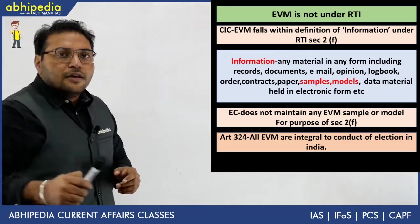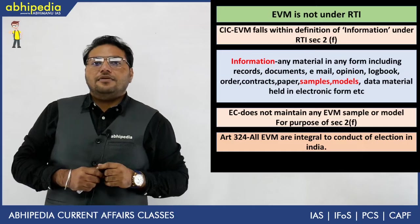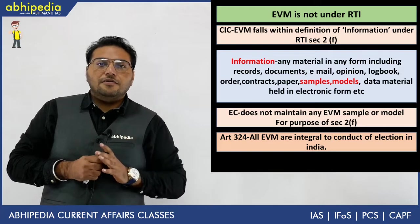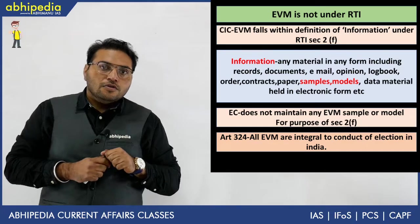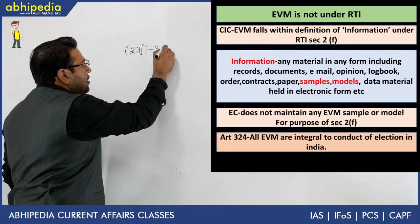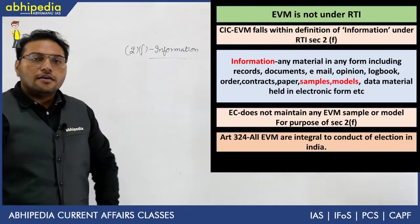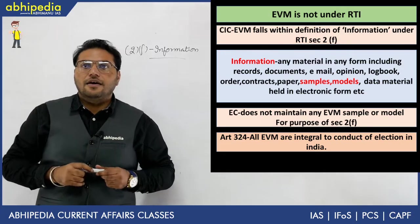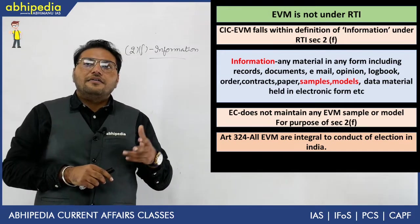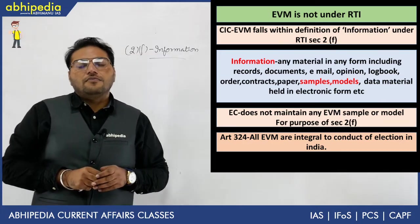Under Section 2 of RTI, specifically Section 2(f), the definition of 'information' is given. It states that information means any material in any form, including records, documents, email, opinion, log book, order, contract, paper, samples, model, and data material held in electronic form, etc.